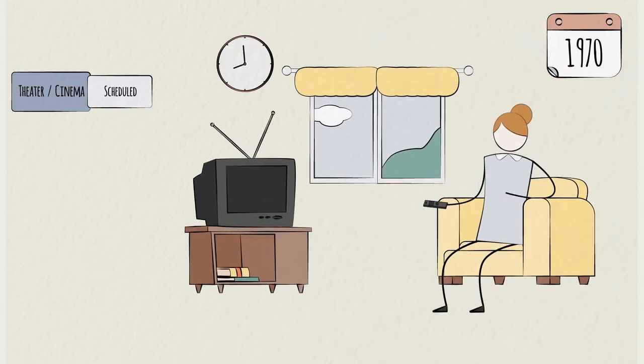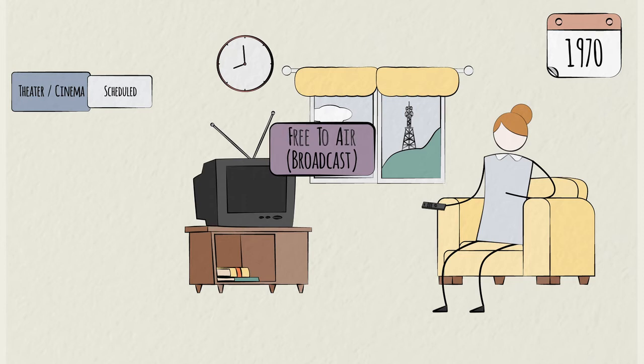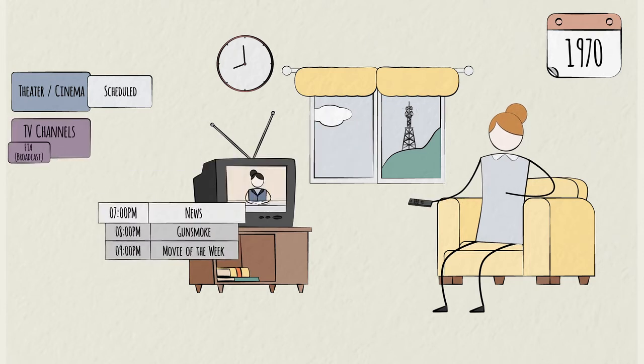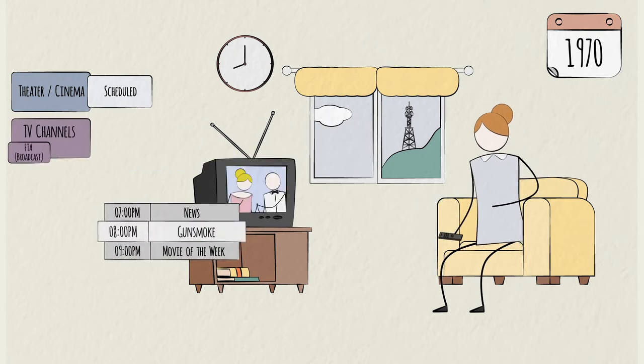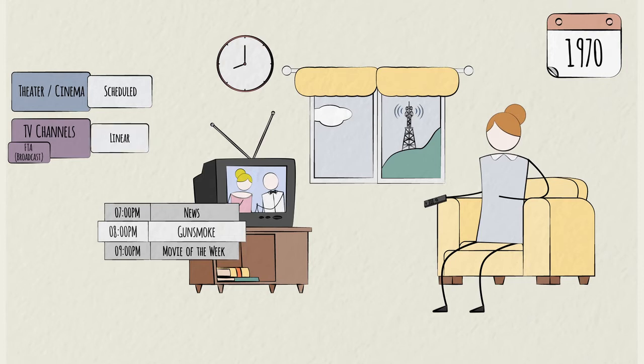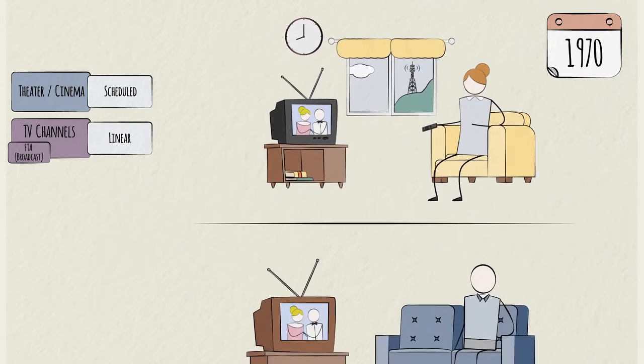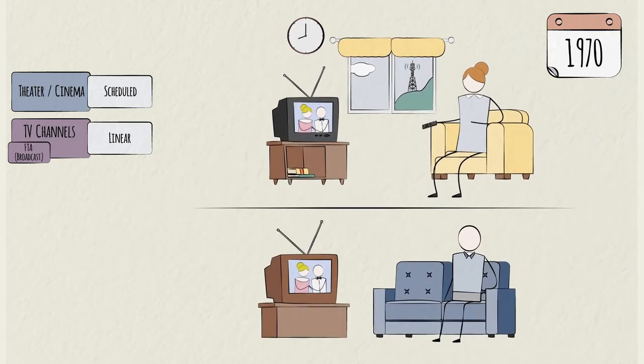It's 1970. Now, programs are broadcast into your home. It's free to receive, so it's known as free to air. You rush home to watch your favorite series at 8 p.m. These programs are scheduled in what is called linear viewing. You can only watch each program while it is being broadcast, and everyone watching that TV network or channel is watching the same program. That's our second consumption channel, TV.